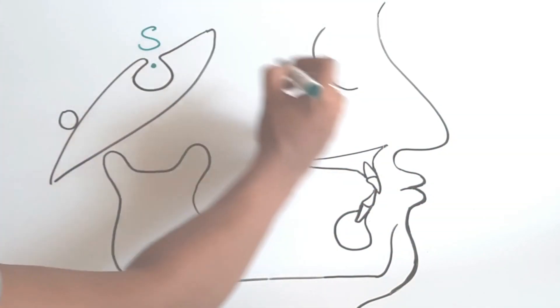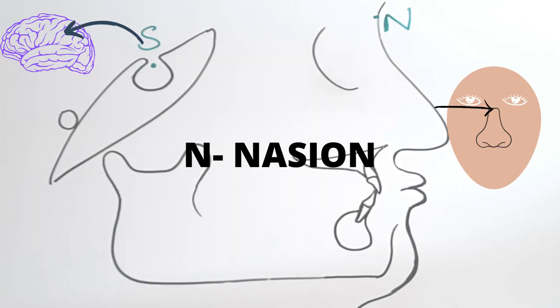Let's draw sella and nasion. Sella is the center of sella turcica or the pituitary fossa, and nasion is the point where nasal and the frontal sutures meet.